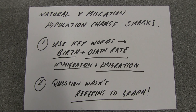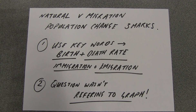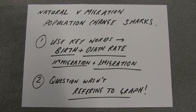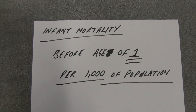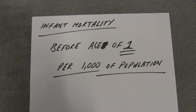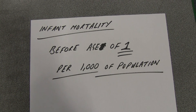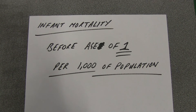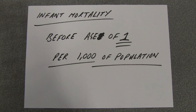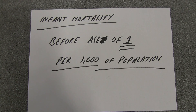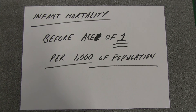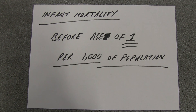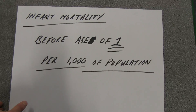Now some of you started writing about the graph that was below it, but actually the question didn't ask you to refer to the graph, so if you did refer to the graph you didn't get any marks. Up next we've got that simple two mark question which asks you what infant mortality is. You all understand the concept of infant mortality but you got some key things wrong. Infant mortality is the number of children that die before the age of one per 1000 of the population. If you put five, or if you didn't put 'per 1000 of the population,' you couldn't get all the marks available. So make sure that you keep that going.